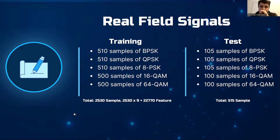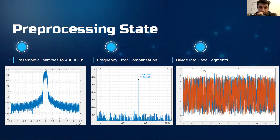Here is the real field dataset. I have 2,530 samples — 22,770 features for training and 515 samples for testing. Here are the distributions of classes. To ensure all samples reside within the same feature space, a preprocessing stage is applied: resampling all IQ signals to 48 kHz and correcting frequency errors. The signal is raised to the 8th power and an FFT is applied, generating a peak at eight times the original frequency error. The frequency error is then corrected and samples are divided into one-second segments.